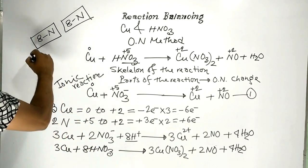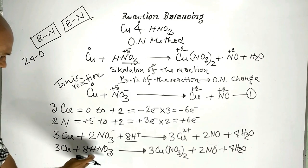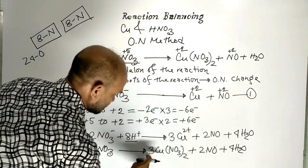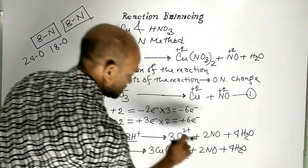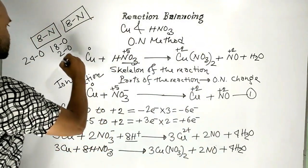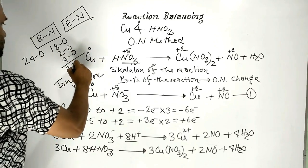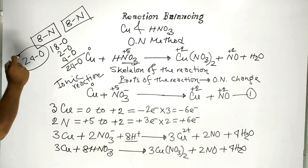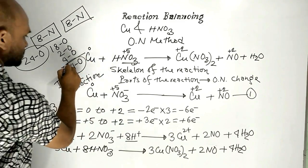Now let us check oxygen atoms. On the left side: 8 × 3 = 24 oxygen atoms. On the right side: 3 × 2 = 6 from copper nitrate, plus 2 from nitric oxide, plus 4 × 2 = 8 from water, giving a total of 24 oxygen atoms. Both sides have 24 oxygen atoms, so the reaction is balanced.